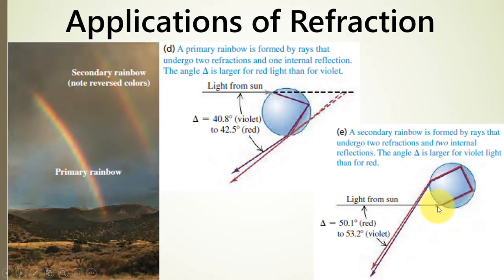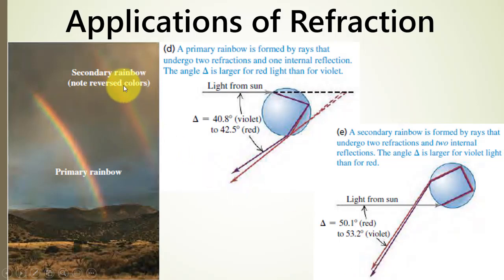The light ray comes in, reflects at one point, then causes total internal reflection, followed by another total internal reflection, and then refraction occurs as it exits. This produces an upside-down rainbow, which we call the reverse, auxiliary, or secondary rainbow.